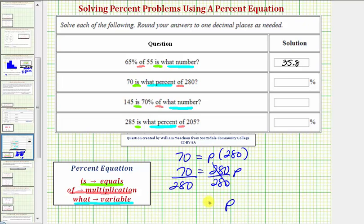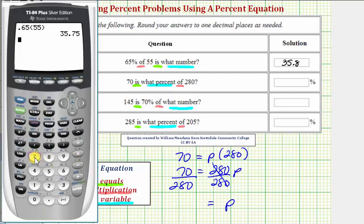So on the right, we have just p. On the left, this simplifies to one-fourth, which is equal to 0.25, but just in case we don't recognize this, 70 divided by 280 is equal to 0.25.